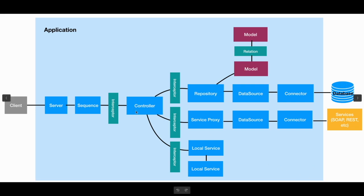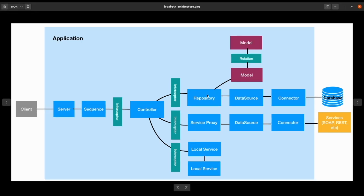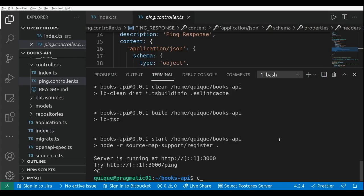This is a high-level architecture diagram of a LoopBack application. I'm going to implement the controller and the repository, which will be connected to our model. The model will be a Book with an id, a title, and a list of authors. The repository connects to the data source, which connects to an in-memory database. We can also connect a service proxy to a REST API or SOAP web service. All these components are connected using dependency injection — the controller injects the repository, and the repository injects the data source.